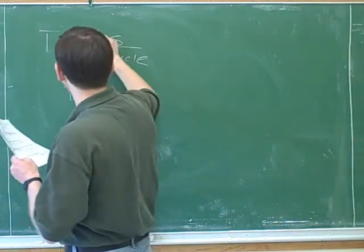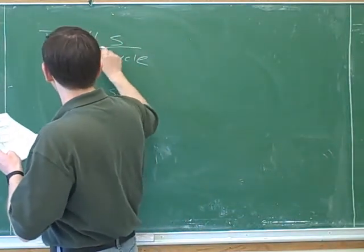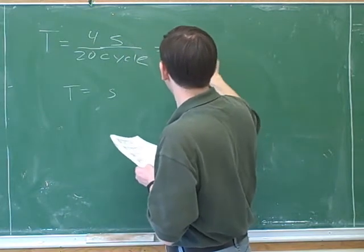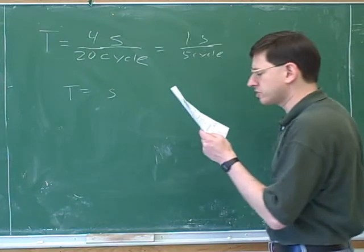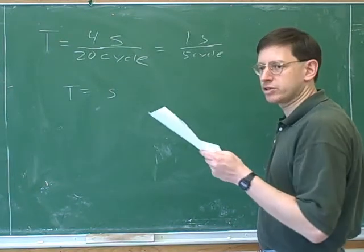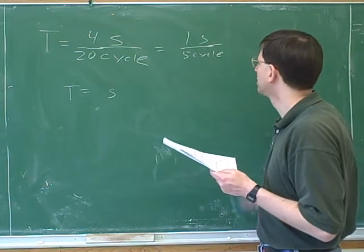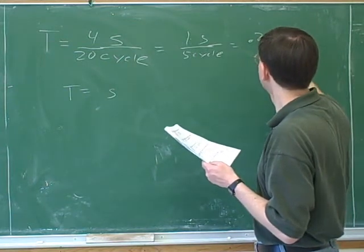Then we can clearly see here there's 4 seconds and 20 cycles, which means 1 second, 5 cycle. How would you interpret the answer that you got? Your answer was 0.2 or one-fifth. What's the interpretation of that? 0.2 seconds is how long it takes for one cycle.